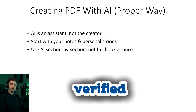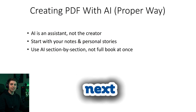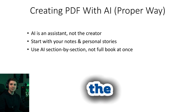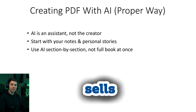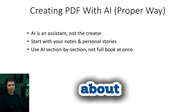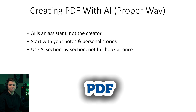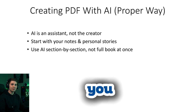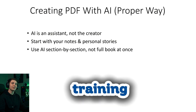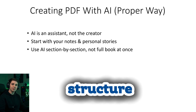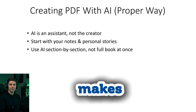Once you've chosen a topic with verified demand and a unique angle, you're ready for the next step: actually creating the PDF with AI. But this is also where people take shortcuts and end up with a low-quality product. If you think you can just type 'write me an ebook about dog training' and publish whatever pops out, that's not going to work. AI is your helper, not your brain. You still need to provide direction, structure, and your own insights — that's what makes the ebook valuable.